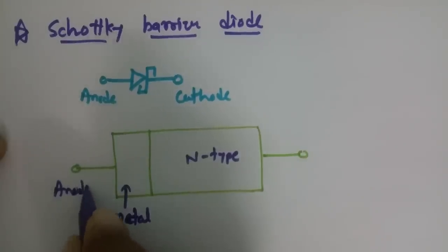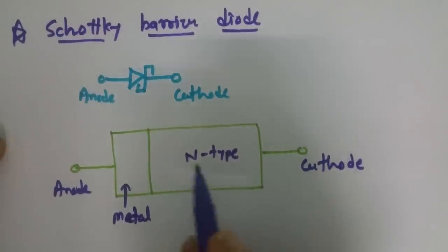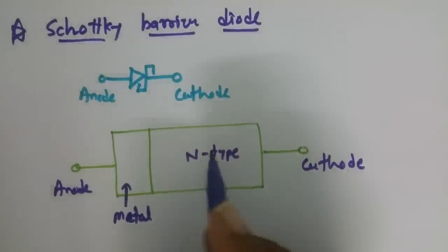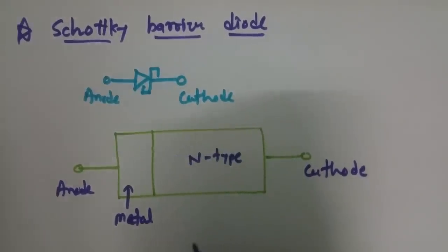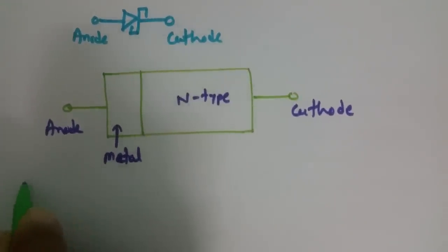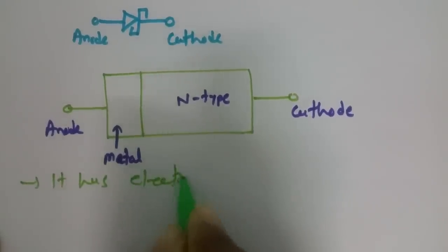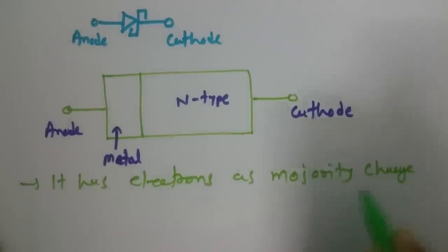So we can say this is the anode and this is the cathode, where in its internal structure we have metal on one side and N-type material on the other side. When we diffuse metal with N-type material, it becomes a unipolar device — there will be no depletion region, and there will be only electrons as the majority carrier.